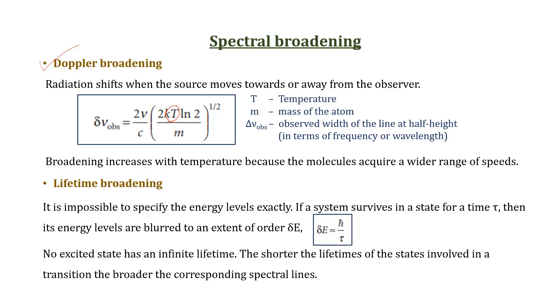And the next main reason is lifetime broadening, which is due to the fact that no excited state has an infinite lifetime, and the broadening is explained by an equation h cross by tau, where h cross is h by 2 pi and tau is the lifetime of the molecule.